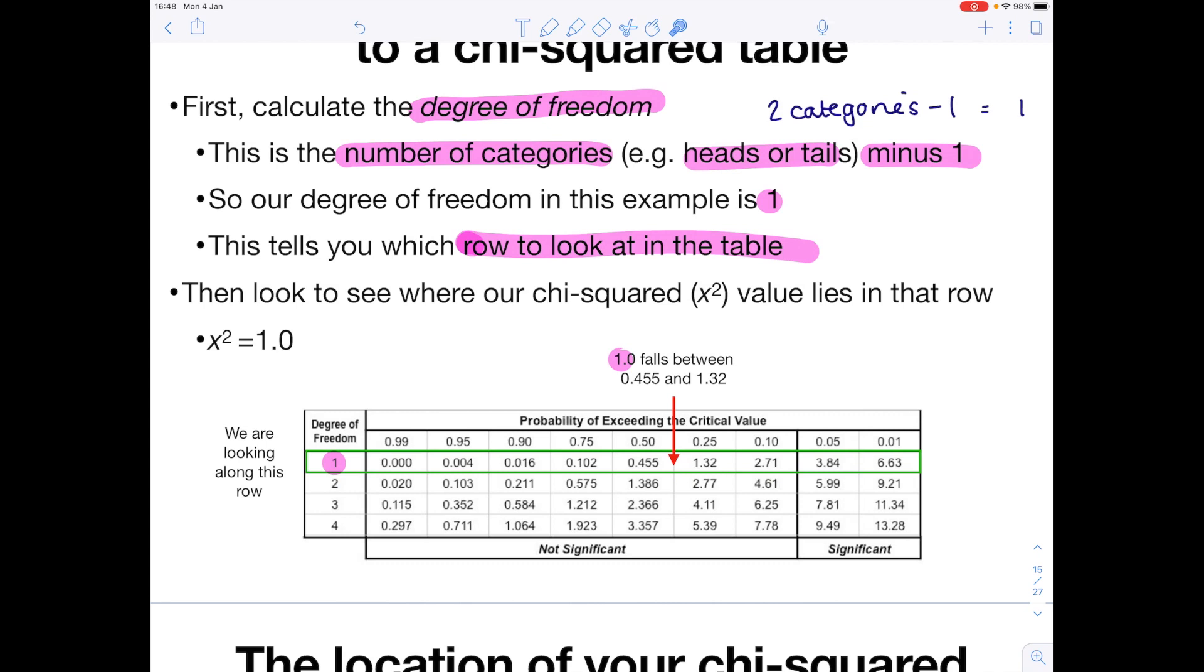Now the chi-squared table, as you can see, is split into 2. You've got this larger box here, followed by this box. Notice, if your calculated value falls into this larger box on the left-hand side, we can see that our results are not statistically significant. If our value calculated had fallen into this box over here, then we would say that our results are statistically significant.